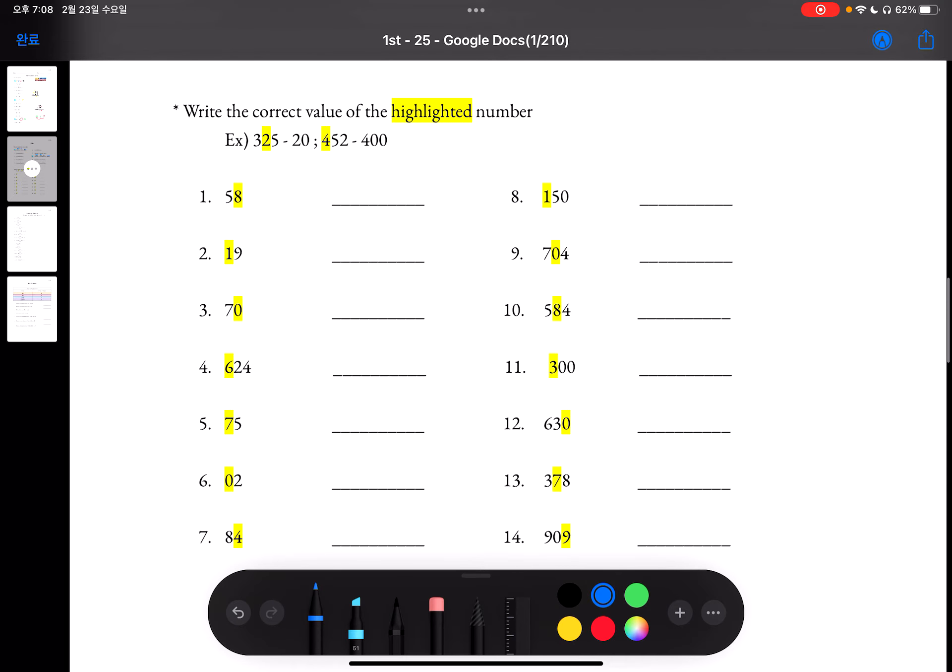At the bottom of the page, you'll see write the correct value of the highlighted number. So for example, 325, the value of 2 is equal to 20. And from 452, the value of 4 is equal to 400.